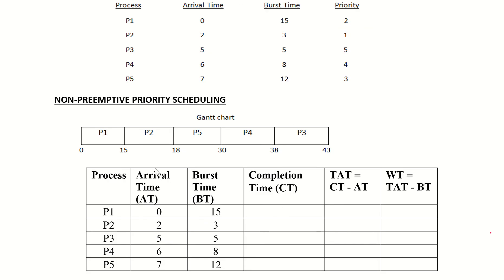Now we have the non-preemptive priority scheduling algorithm. For the preemptive version, we got average waiting time of 14.6 and average turnaround time of 22.8. Now let us solve the non-preemptive priority scheduling algorithm.